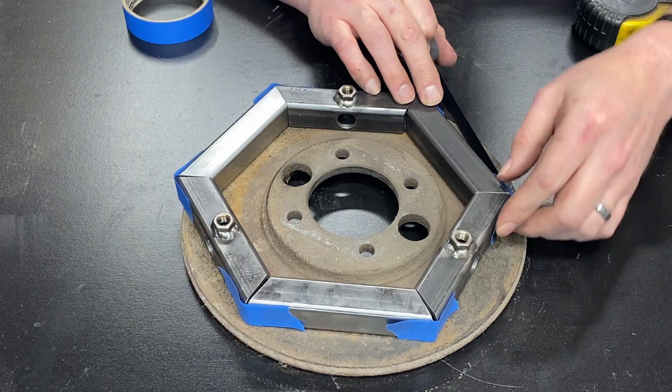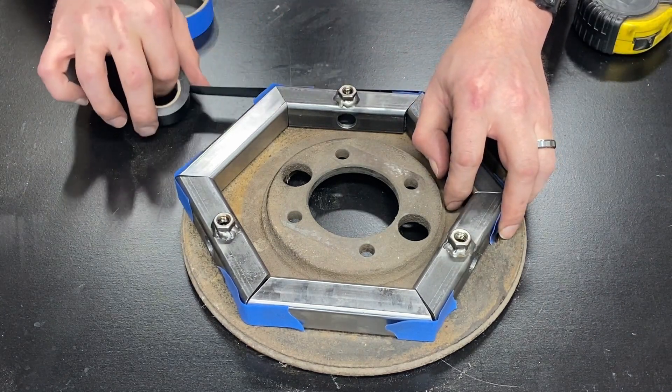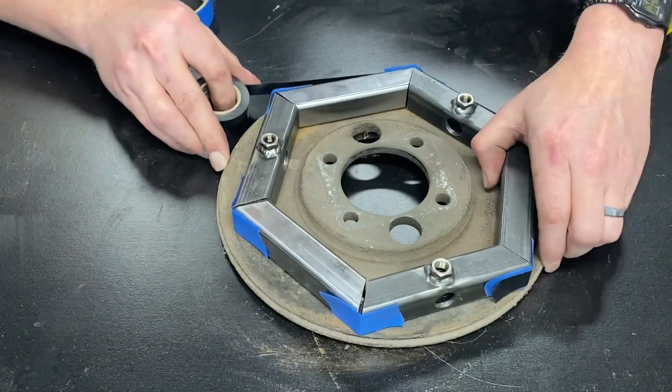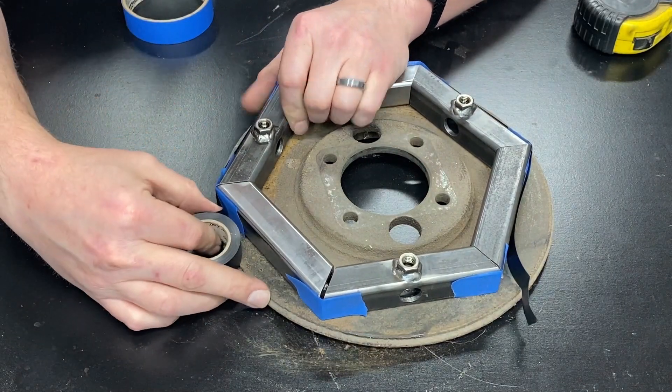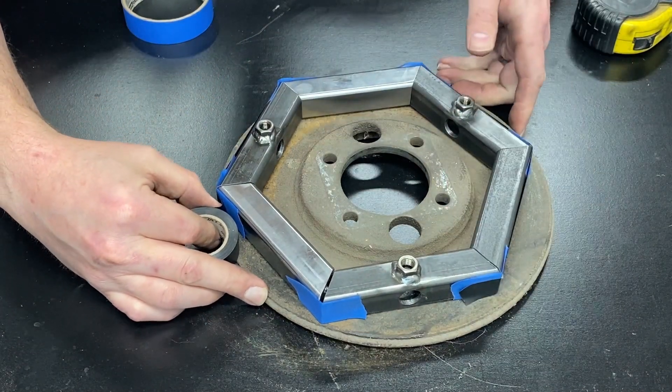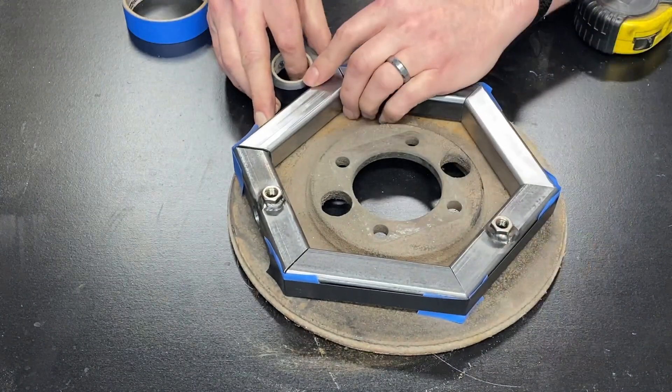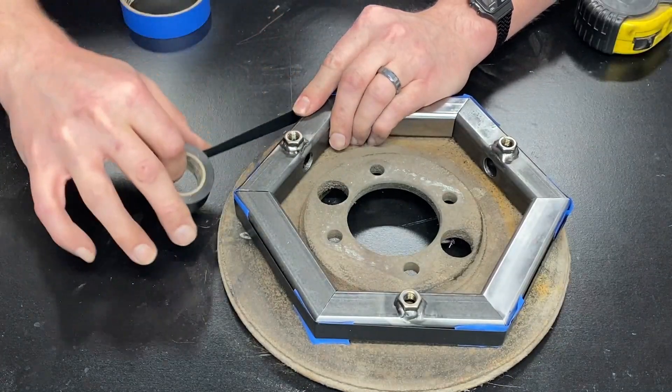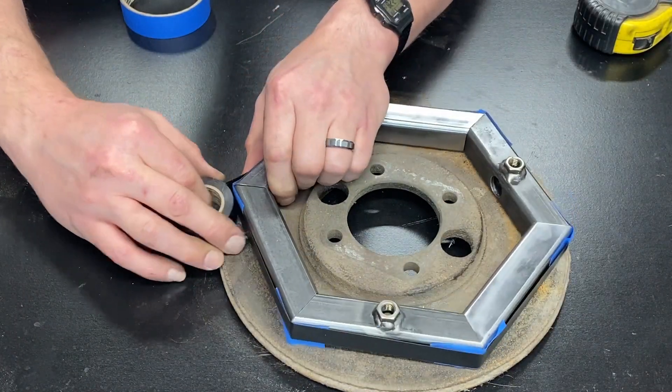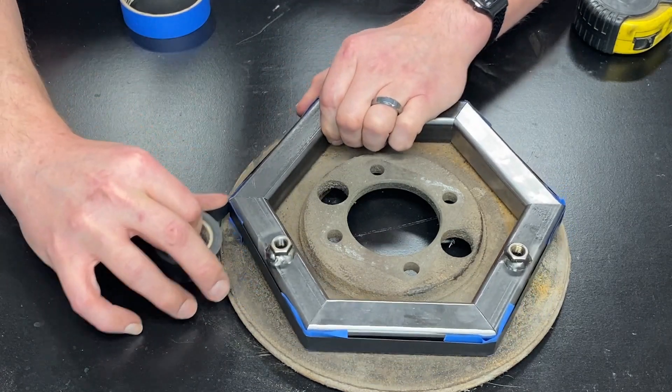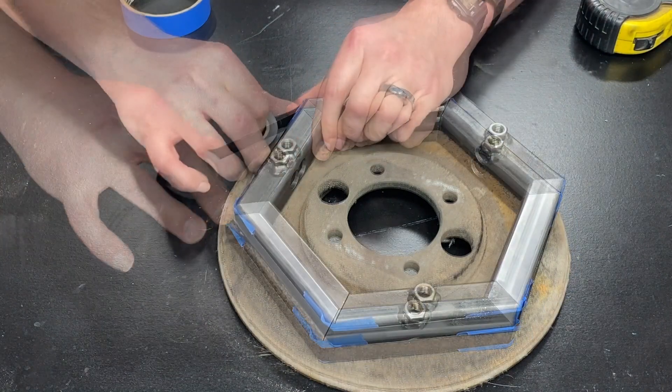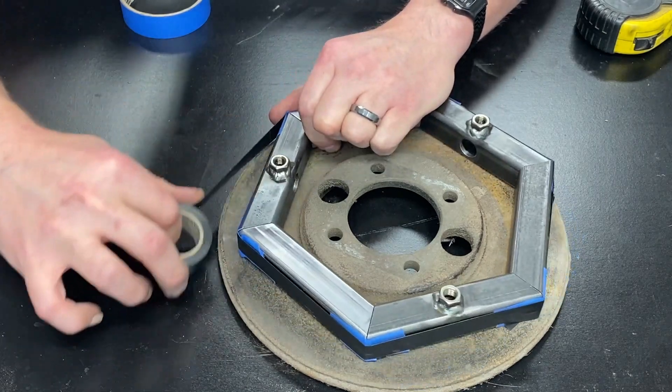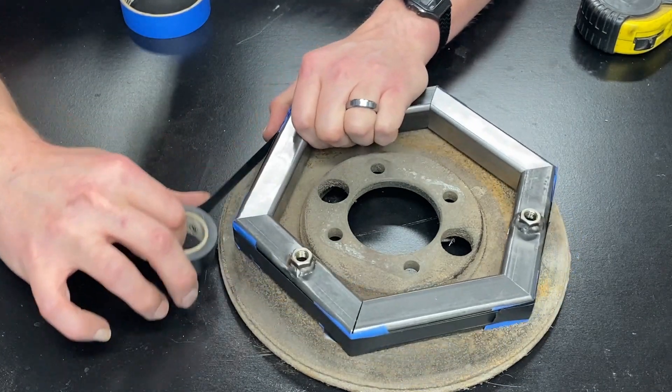So we're going to take and put this right here. And we are going to start working our way around. The first lap's the hardest because again, like in this particular case, I have grease and oil on the part so it's not sticking very well. But once you get a full revolution, you are tight. I am putting, as you can see, a lot of stretch on this tape. And I'm just pulling it around and getting it into position.